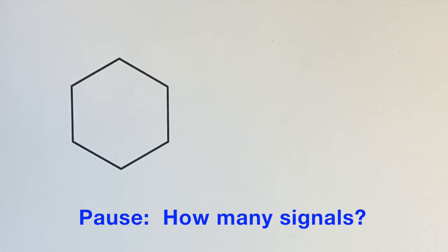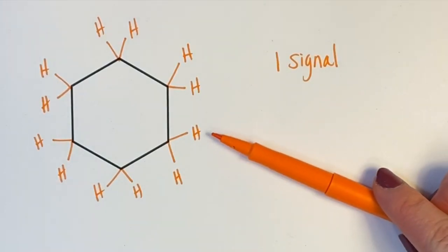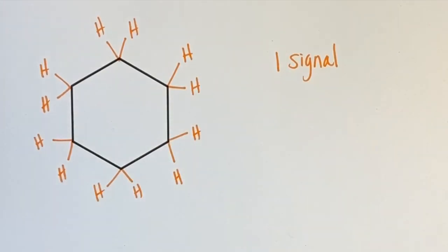In the structure of cyclohexane, all protons are in an identical environment, so there is only 1 signal in the NMR spectrum. This signal accounts for all 12 protons. Because there are no other protons to compare it to, integration would likely not be provided, and it would be understood that all protons in cyclohexane are identical.